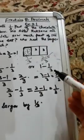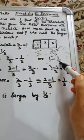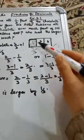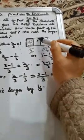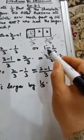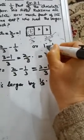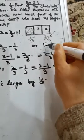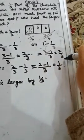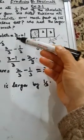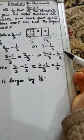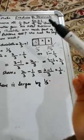Alternatively, 1 minus 1 upon 3 — the whole chocolate is 1, minus Samina's share of 1 upon 3. To subtract, the denominator becomes 3: 3 upon 3 minus 1 upon 3 equals 2 upon 3. Both methods give the same answer — 2 upon 3. So Rukhsana ate 2 upon 3 of the chocolate.